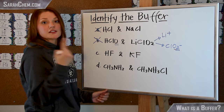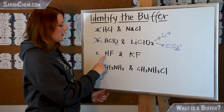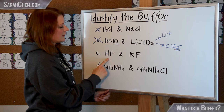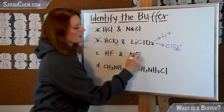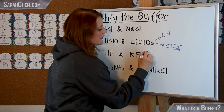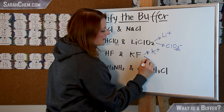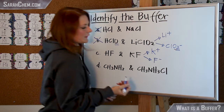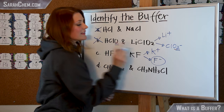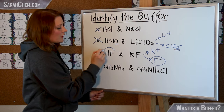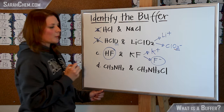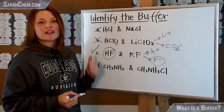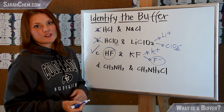For the next example, I check the first criteria: do I have a weak acid? Yes, I have a weak acid. Now I look at the salt — this would break up into K+ and F−. I see that F− is the conjugate base of this weak acid, so yes, this one here is a buffer solution.